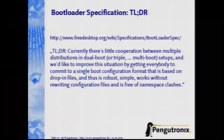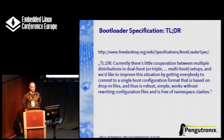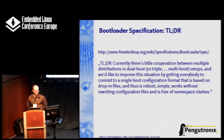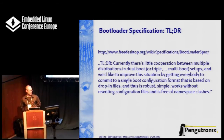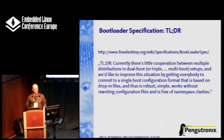Instead of requiring an arrow between each combination of distribution and board, let's put a well-defined way to start our kernel between the boards and the distributions — and that's what the bootloader spec does. It's created by Kai Sievers and Harald Hoyer; Lennart Poettering was also involved. It's on FreeDesktop.org. It says: currently there's little cooperation between multiple distributions in dual-boot or multi-boot setups, and we'd like to improve this situation by getting everybody to commit to a single boot configuration format based on drop-in files — robust, simple, without rewriting configuration files, and free of namespace clashes. Note: this is for x86, but why shouldn't we use it for ARM as well?